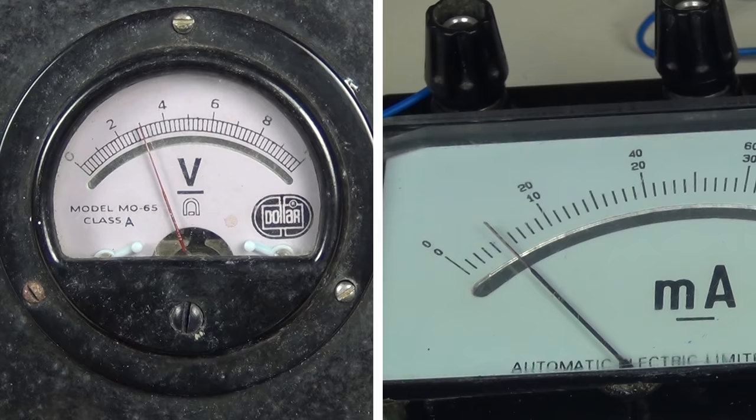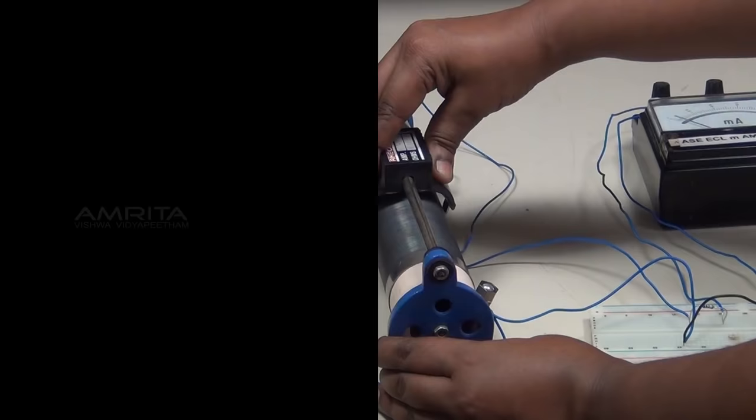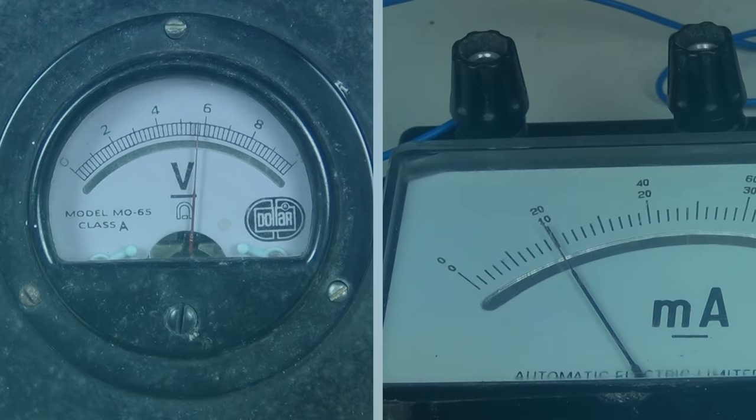The experiment is continued till the milliammeter shows a large deflection while the voltmeter reading remains constant, indicating the breakdown voltage.